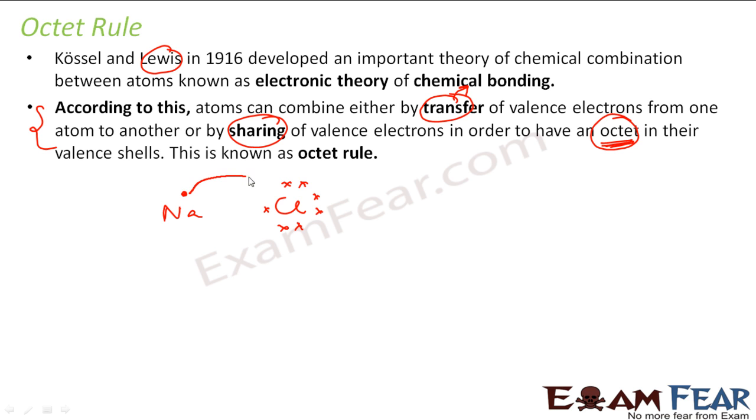So sodium can easily lose 1 electron to get stable. Chlorine readily accepts 1 electron to get stable. So this becomes Na+ stable, Cl- stable, and both are attracted by the electrostatic force. This is NaCl. And thus sodium and chlorine combine to form sodium chloride. This is the case of transfer of electrons.